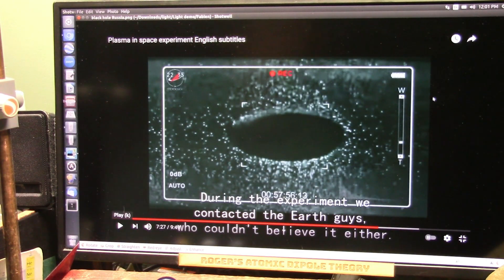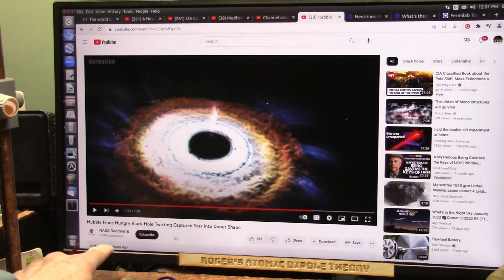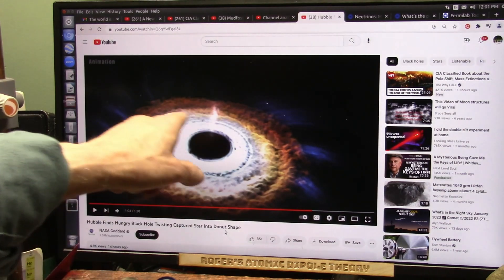Okay, my friends, in the next video, part two, we're going to be talking about black holes in space, which is just what they just claimed they found. This is NASA Goddard Space Center. Hubble finds hungry black hole twisting captured star into a donut shape.